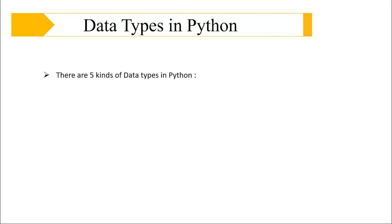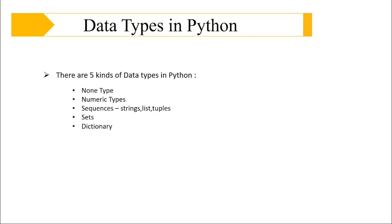There are five kinds of data types: None type; numeric types including integers, floating point numbers, and complex numbers; sequences including strings, lists, and tuples; and sets and dictionary, also known as collections. A set is an unordered and unindexed collection, whereas a dictionary is a map of key-value pairs — a hash map of key-value pairs.